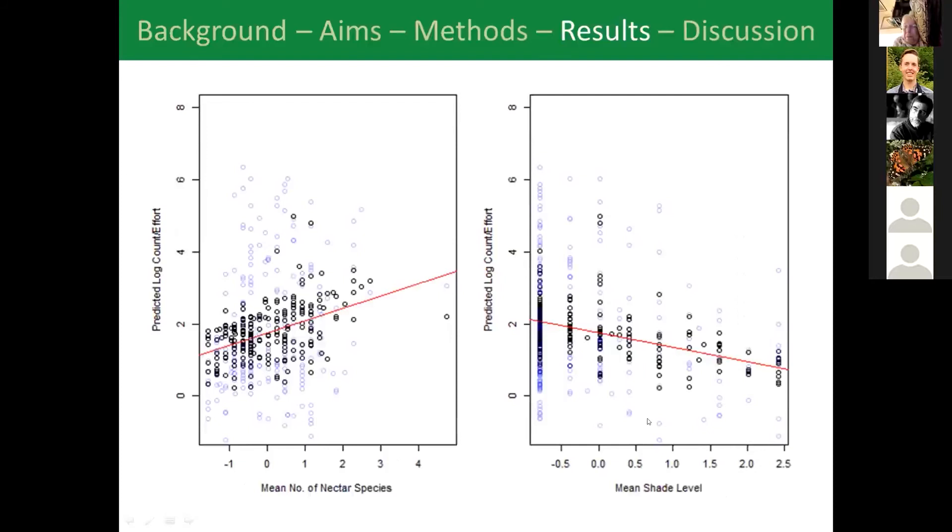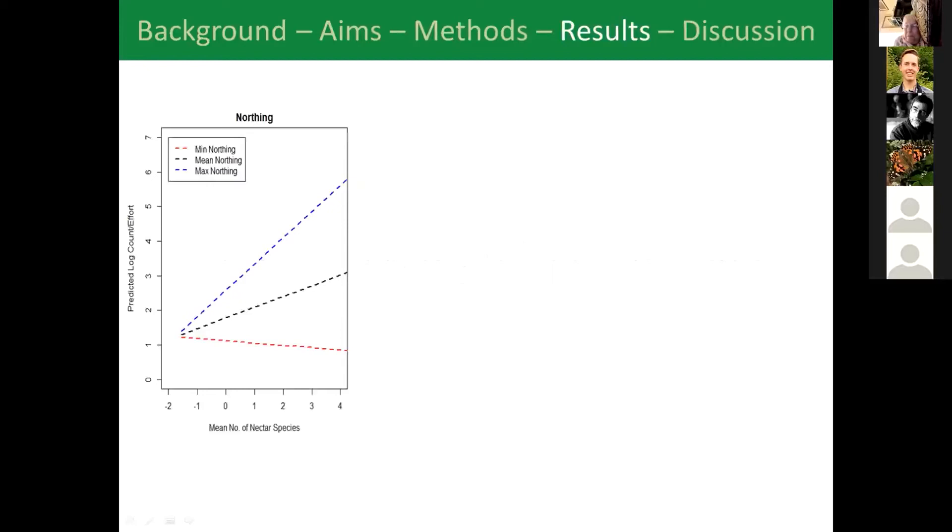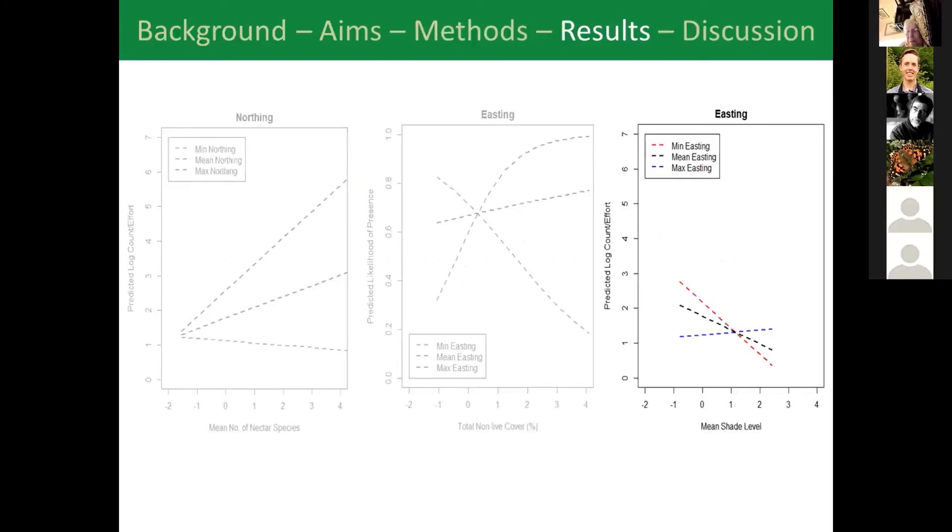We'd identified some of the main features but we're interested in whether those changed geographically. What we found was that there are a few isolated effects. You can see that nectar species appear to have a more positive effect in the north. You can see that in the east total non-live cover had a negative effect in the west but a positive effect in the east and you can see that shade also had a negative effect in the west and a positive effect on the east. These aren't particularly relevant so I won't go into them but what they do seem to show is that microclimate requirements at least don't seem to vary with geography so it doesn't seem like the northern sites require warmer microclimates than the southern sites.